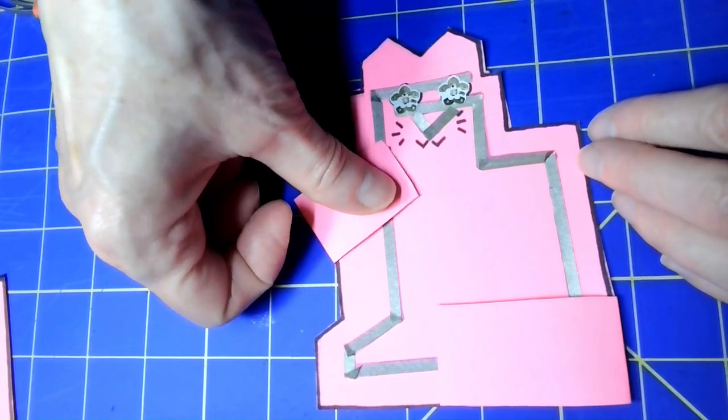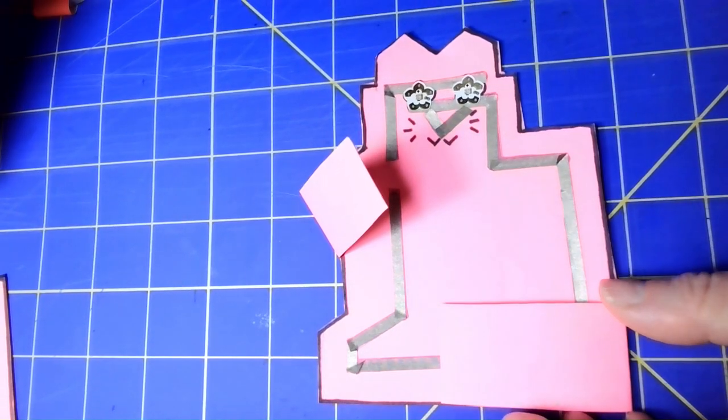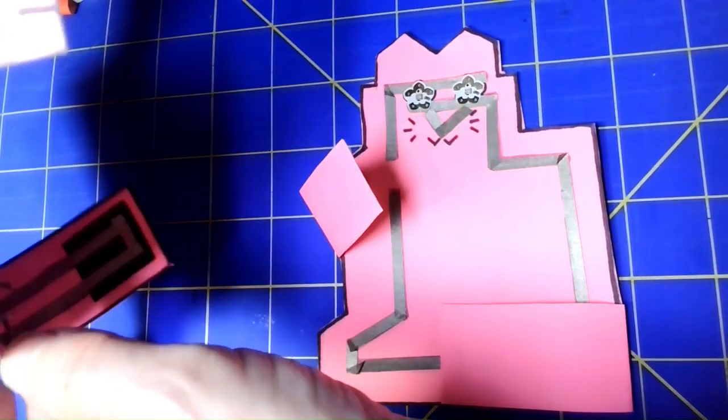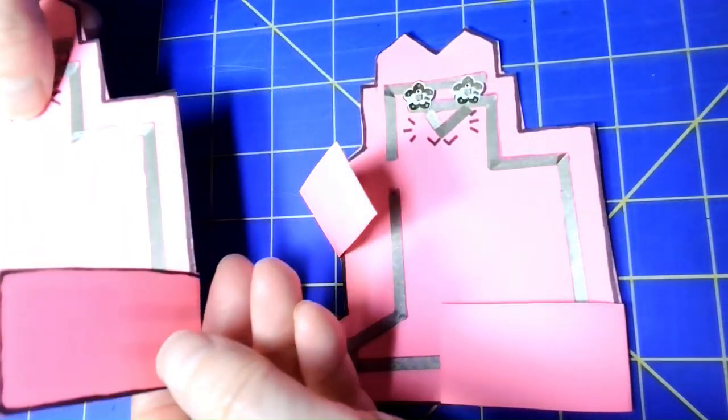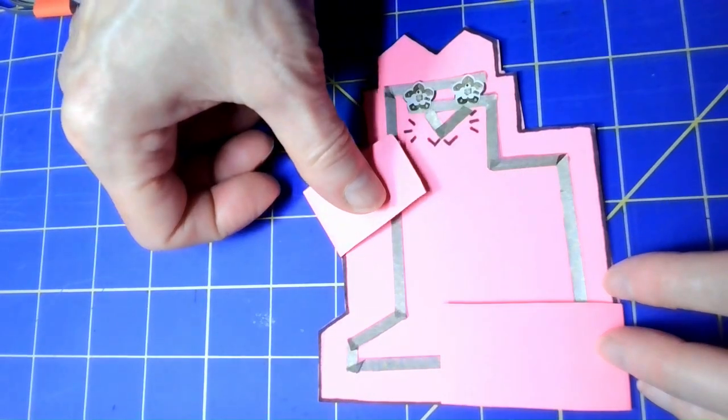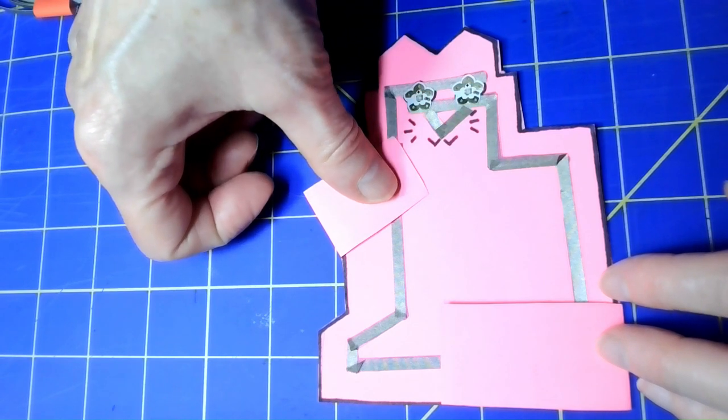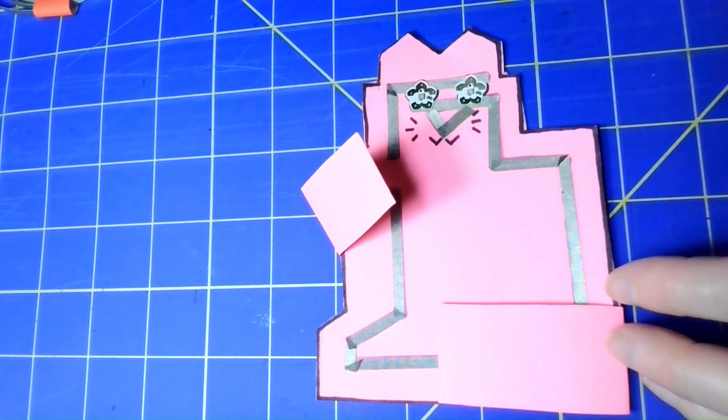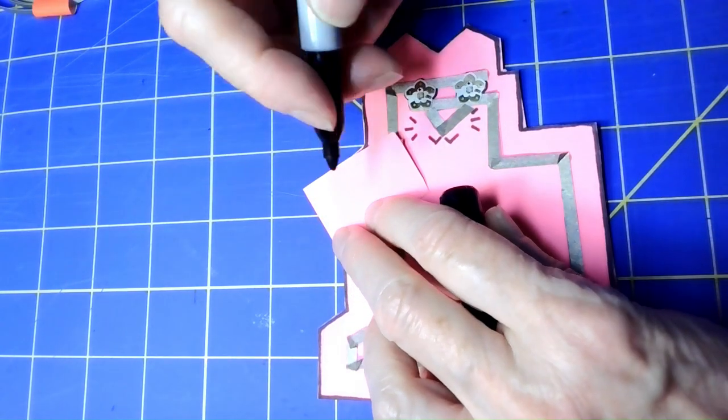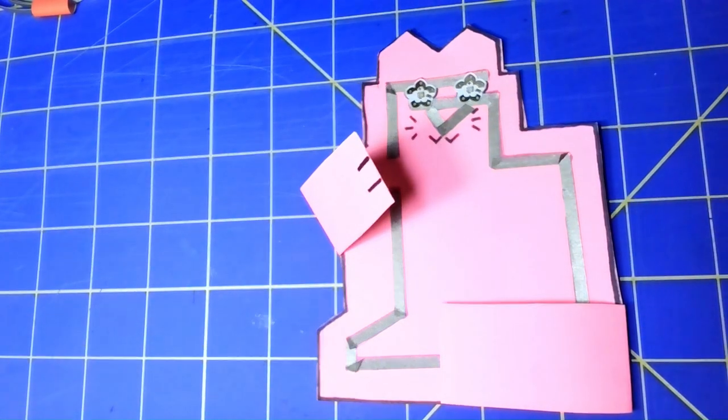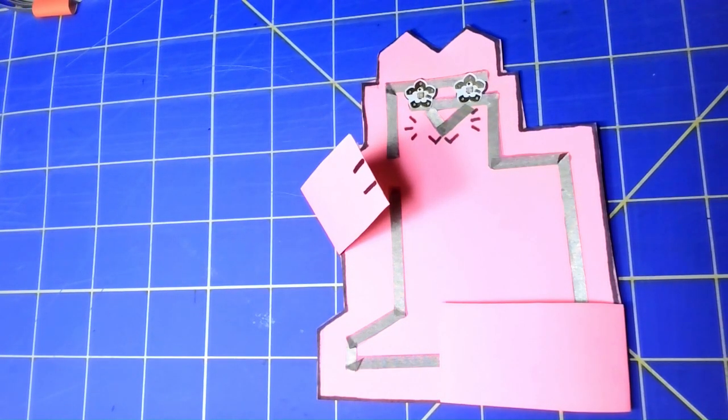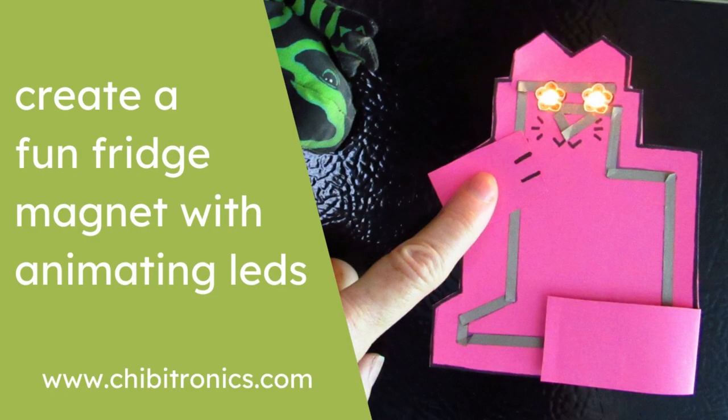So there you go. And as I said, you can take some more of that magnetic sheet and put it on the back and have your own refrigerator magnet that lights up when you play with the kitty's paw. You can even give the kitty some toes here. And there you have it. Thank you. Bye-bye.